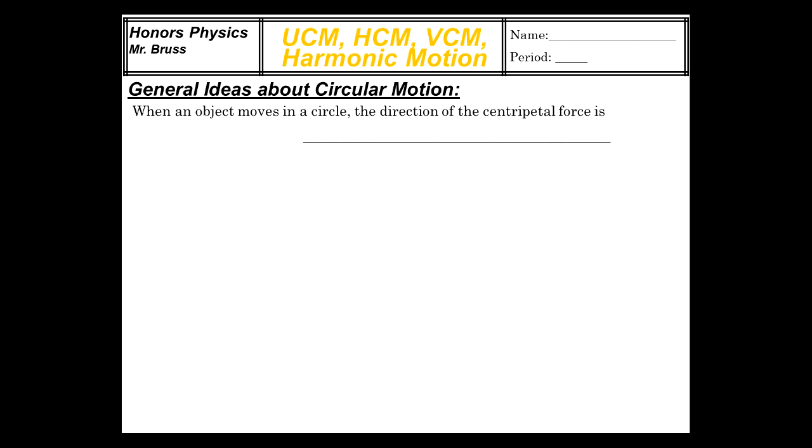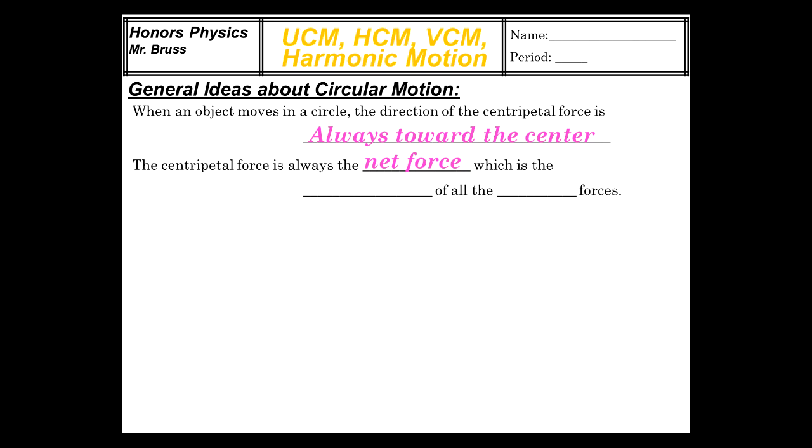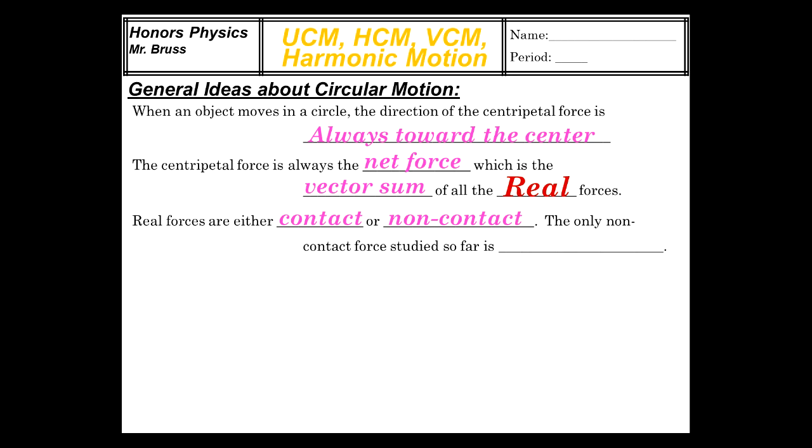Some general ideas when an object moves in a circle. The direction of centripetal force is, yes, this is review, always toward the center. The centripetal force is always the net force. The centripetal force itself, this is not a force really. We call it centripetal force, but it's the net force which is the vector sum of all the real forces acting on the object in circular motion. They're either contact or non-contact, but the only non-contact force studied so far is, that's correct, gravitational. We haven't cited it that much, but we have encountered it and it's a non-contact force.